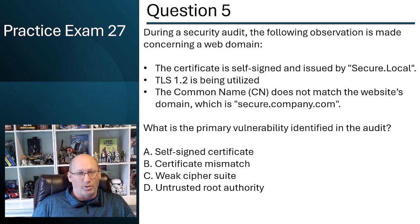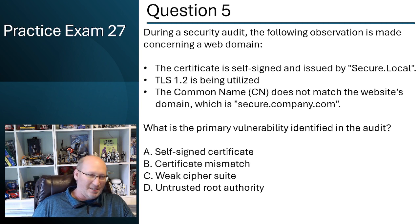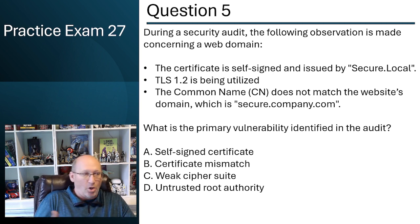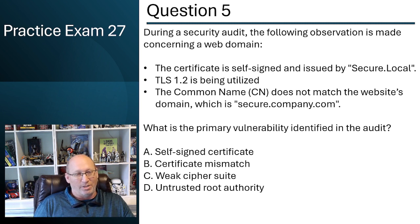And then untrusted root authority — there's nothing in our observation that identifies an untrusted root authority. So A and B are the top answers on the board. If you guessed self-signed certificate, you would be 100% incorrect. It's certificate mismatch. We can have a self-signed certificate on our own internal network and it doesn't tell us anything, but a certificate mismatch — that's an issue. B is going to be our big answer.